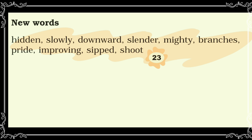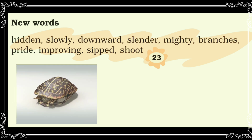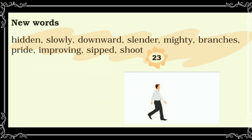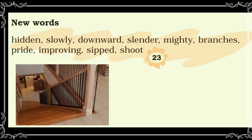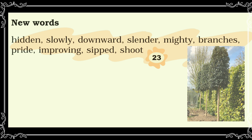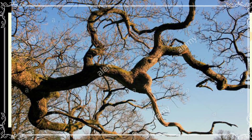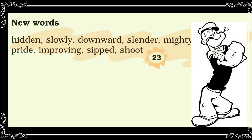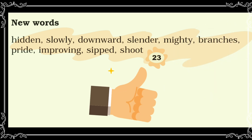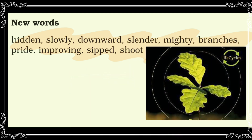Now let us read the new words of this poem. First: hidden. Second: slowly. Third: downward. Fourth: slender. Fifth: mighty. Sixth: branches. Seventh: pride. Eighth: improving. Ninth: sipped. And at last: shoot.